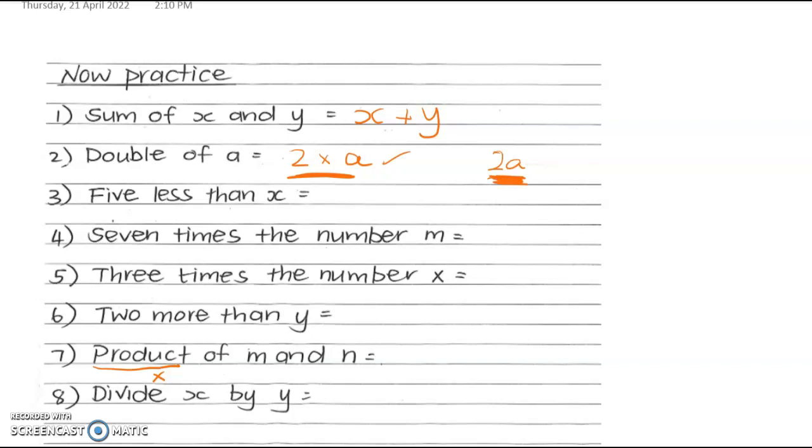5 less than x. So less than means take away. So this is x take away 5. 7 times the number m means 7 times m, and we can write that as 7m. Again at this stage, when we haven't really talked about this convention of not having a times sign, it's fine to write it like this. Later on we'll want you not writing the times sign.